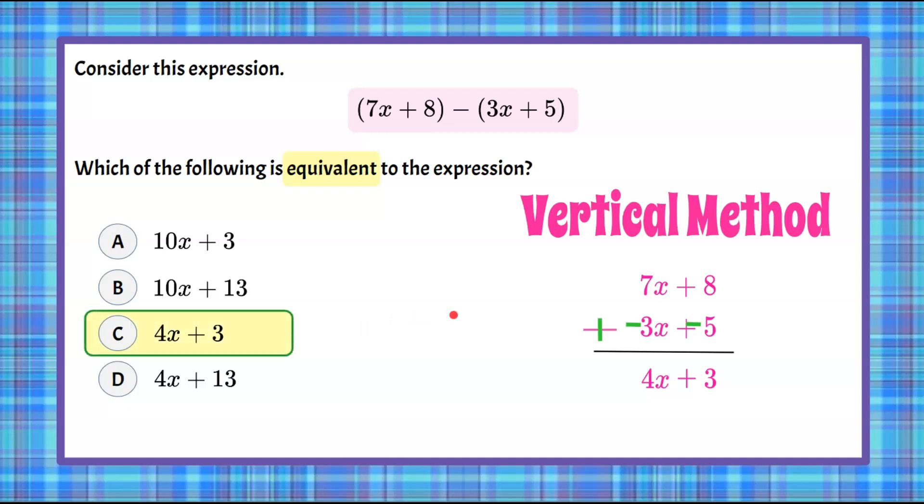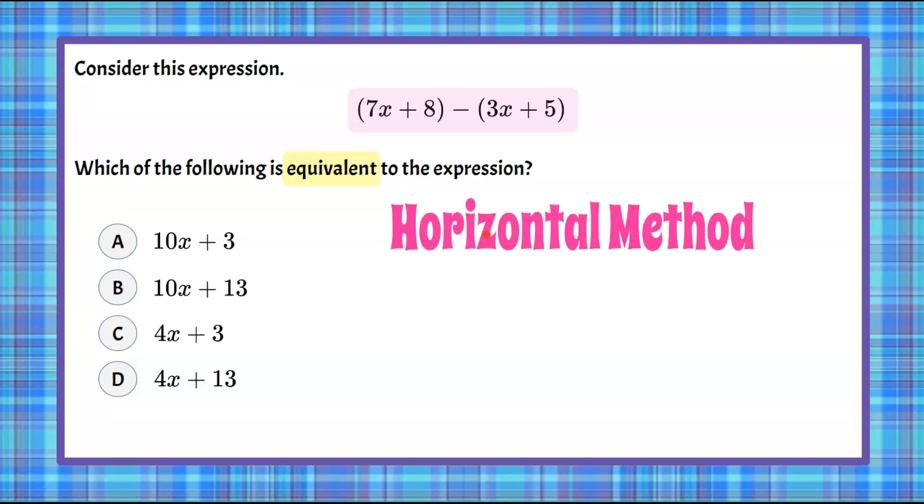All right, let's try a second method. We're going to call this one the horizontal method, meaning we don't rewrite it. We just keep it written the way it is. And we've got to keep in mind that we are subtracting 3x, and we're subtracting 5. So we're subtracting both terms inside the parentheses.